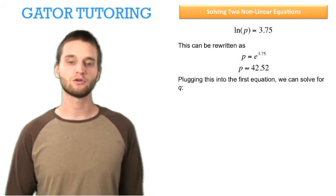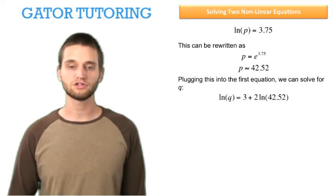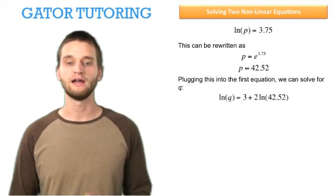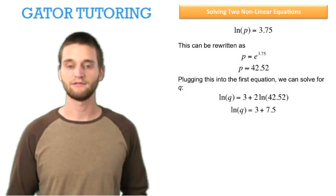If we plug this into the first equation, we can solve for q. Here's our first equation, and we've just plugged in 42.52, which is our estimate for p, the solution. And if we evaluate this, we see the natural log of q must equal 10.5.